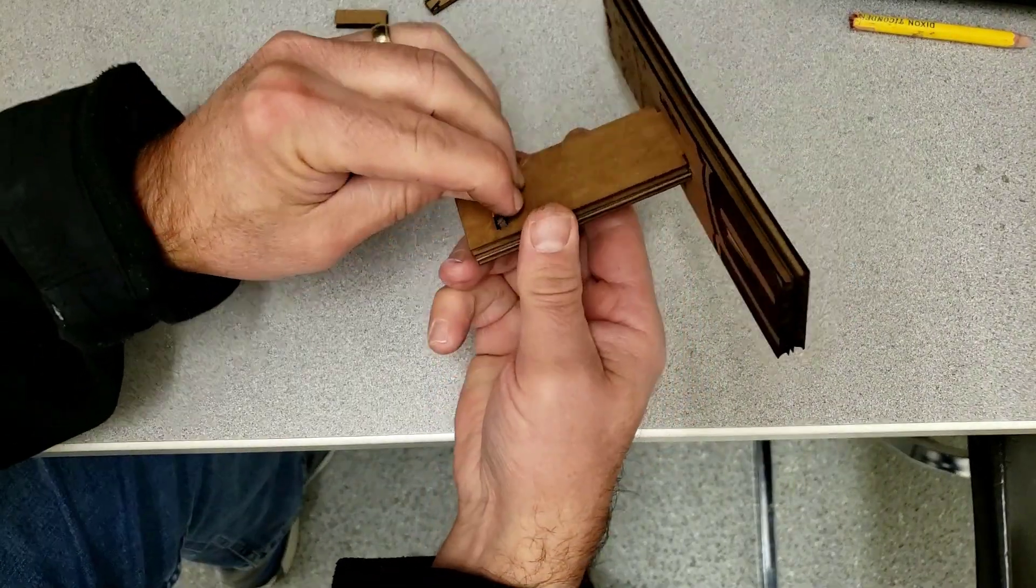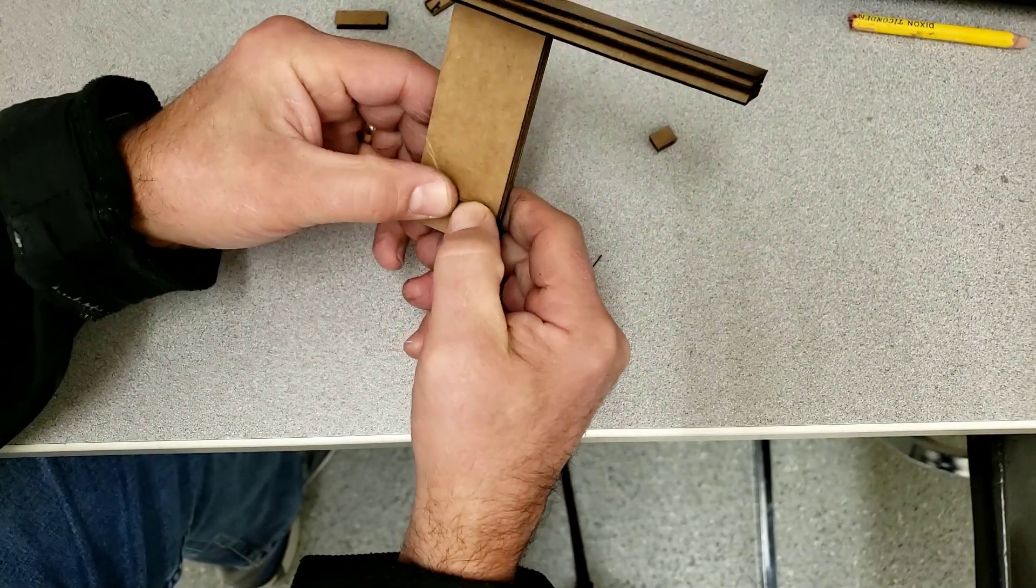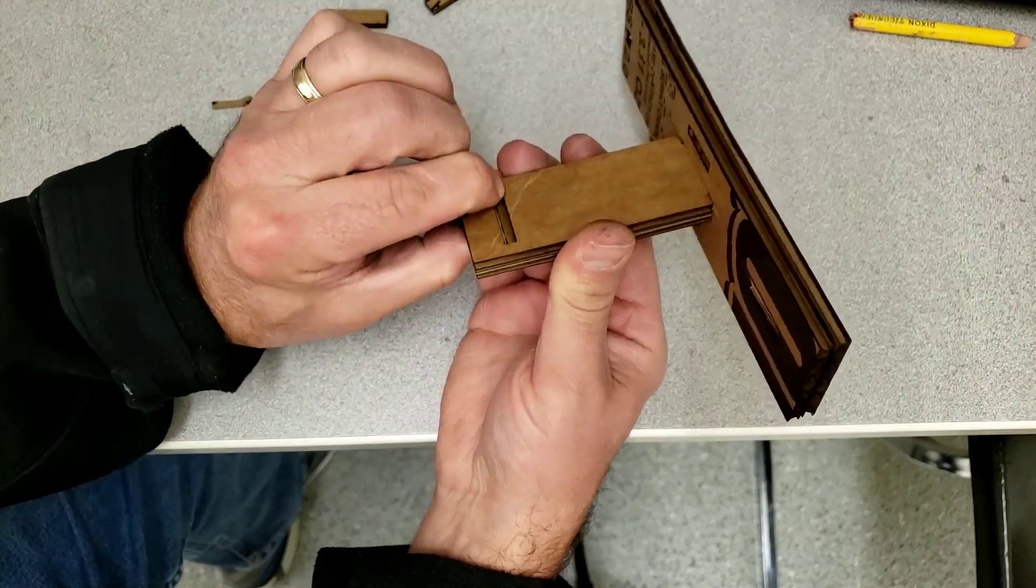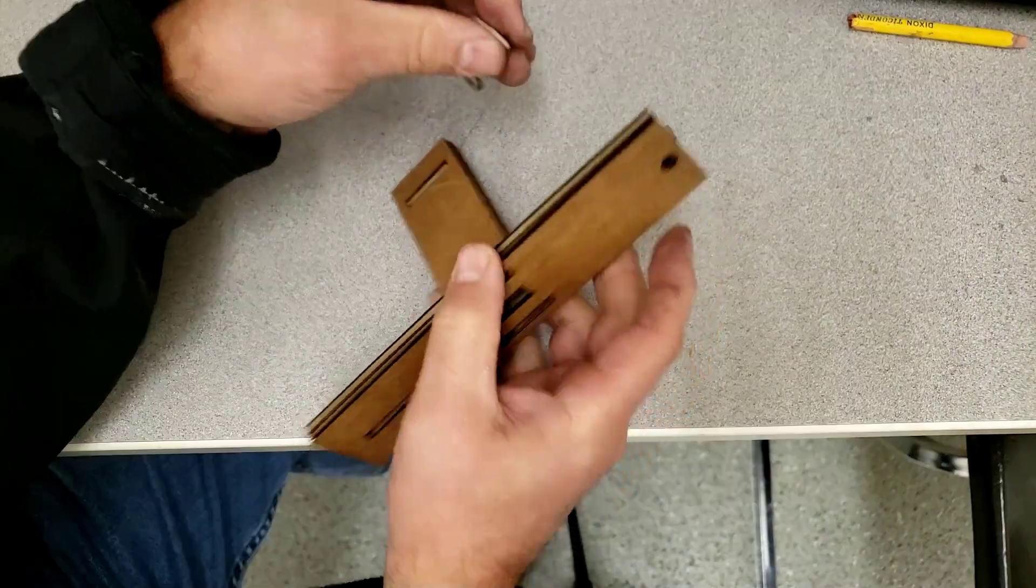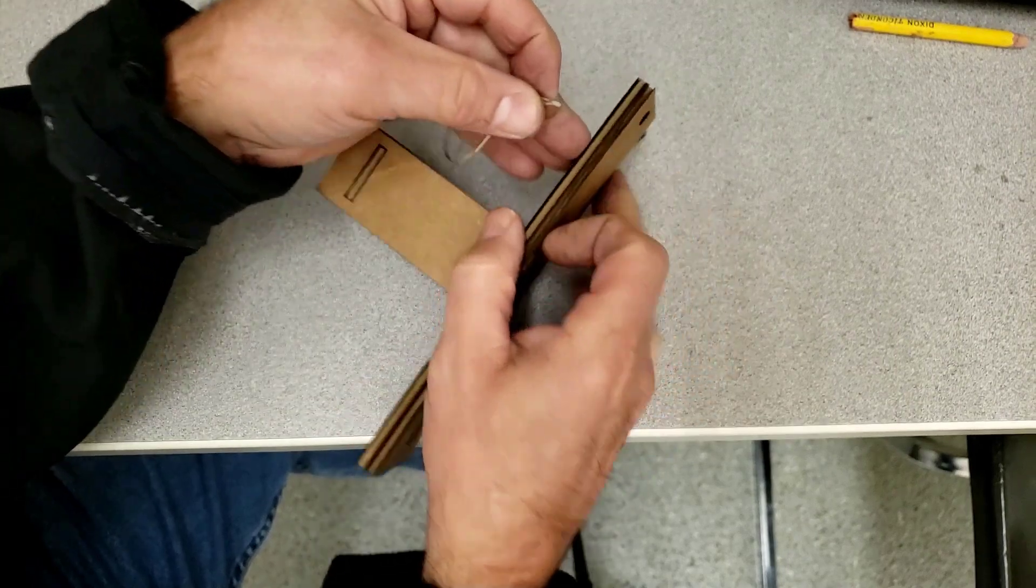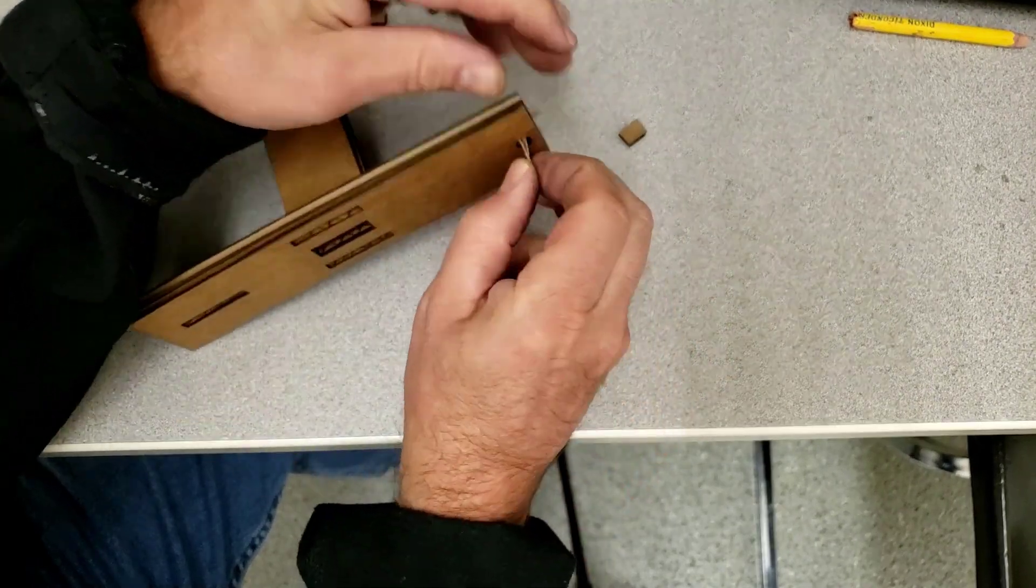One of these pegs goes in here to help those two stay together, and you can see that snaps tight. Pretty darn sweet. When you're attaching the rubber band, if you go from the bottom to the top,